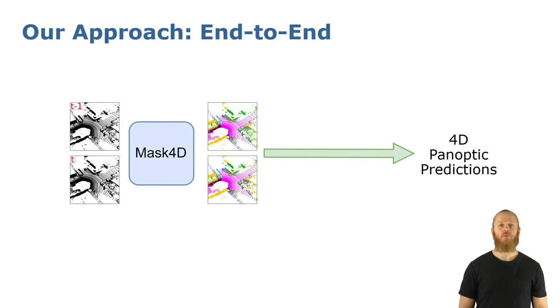So far, previous approaches optimize for both tasks and rely on post-processing steps like clustering, for example, to combine motion and appearance information in the instance association. We propose, on the other hand, tackling the task in an end-to-end manner, jointly optimizing for segmentation and association, and getting rid of the post-processing step.